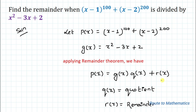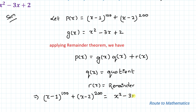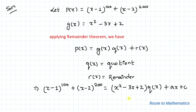We need to find r(x). So p(x), which is (x minus 1) to the power 100 plus (x minus 2) to the power 200, equals g(x) — the divisor x squared minus 3x plus 2 — multiplied with the quotient q(x), plus the remainder r(x). We take r(x) as ax plus c, because the degree of r(x) must be less than the degree of the divisor. Here our divisor has degree 2, so the remainder has degree less than 2.